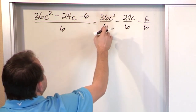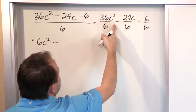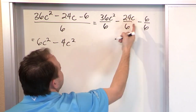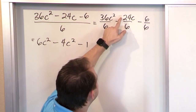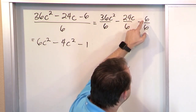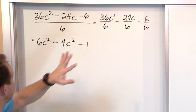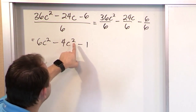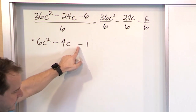So 36 divided by 6 is 6, c² comes along for the ride, minus sign comes along. 24 divided by 6 is 4, and the c comes along — not c², just c. This minus sign comes along for the ride, and 6 divided by 6 is 1. The negatives come along for the ride, so the final simplified result is 6c² minus 4c minus 1.